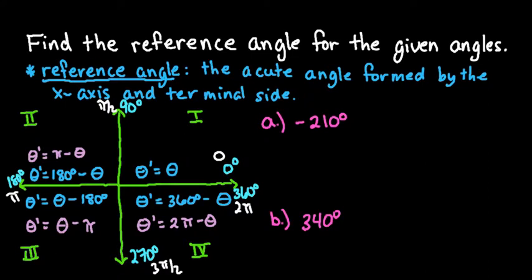Alright, so let's get started with the ones that were given. The first thing that's always helpful is to draw a picture to help you see which quadrant you are in. So whenever you have a negative value, you're going to go clockwise, so the opposite direction.